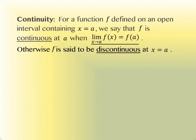Now, we saw some situations in the last section where we weren't able to plug in the value — we had to do some algebraic manipulation and cancel something out. In those cases, we ended up with holes in the graph. Those holes made things not continuous. We didn't have the x value able to be plugged in. If that's not possible, then it is discontinuous at that value. It could be discontinuous because of a hole or because of an asymptote, but it is discontinuous.